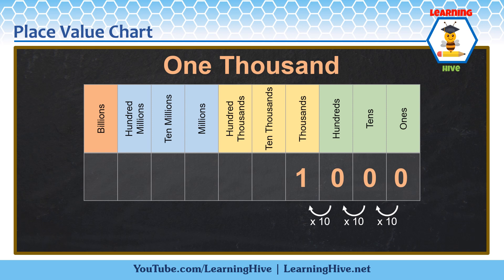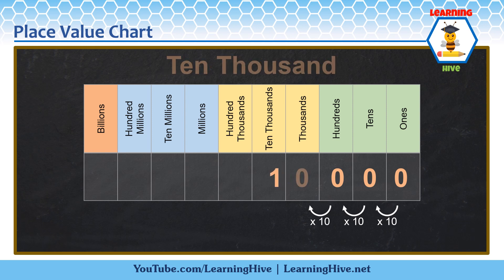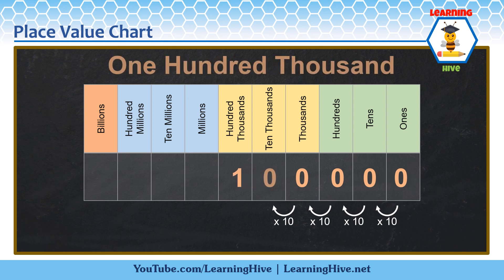Here, 1 has a value of 1,000 — 1,000 has three zeros. Here, 1 has a value of 10,000 — 10,000 has four zeros. Here, 1 has a value of 100,000 — 100,000 has five zeros.